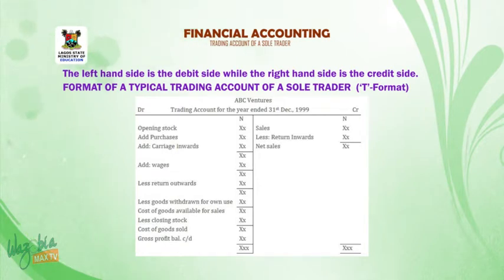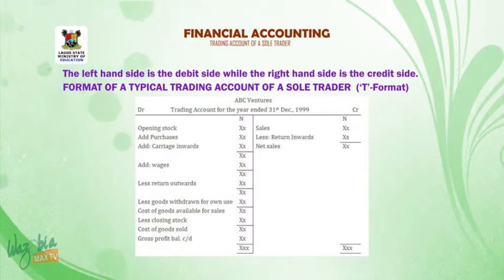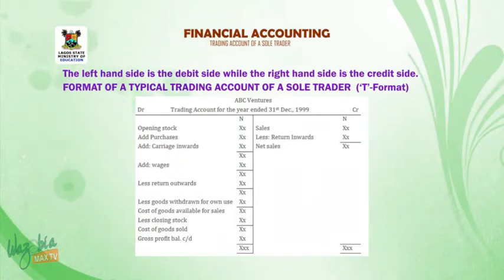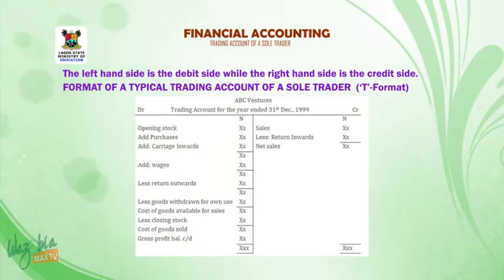We will now look at the format of a typical trading account of a sole trader using the T format. We will draw our T ledger and, as usual, we will write the name of the organization first — in this case, ABC Ventures, trading account for the year ended 31 December 1999.